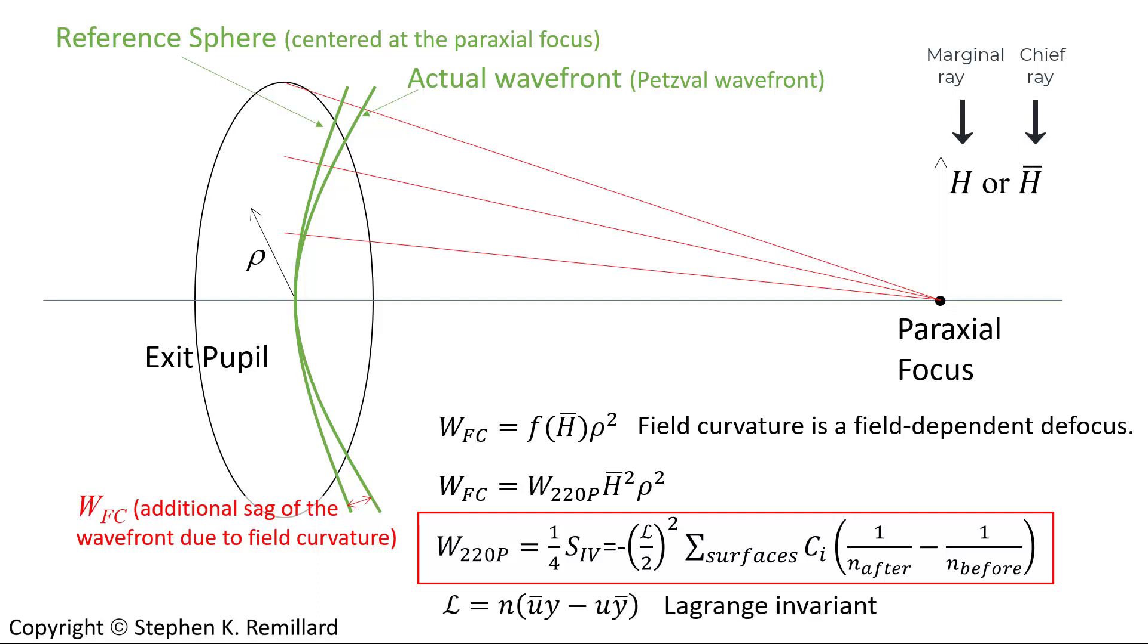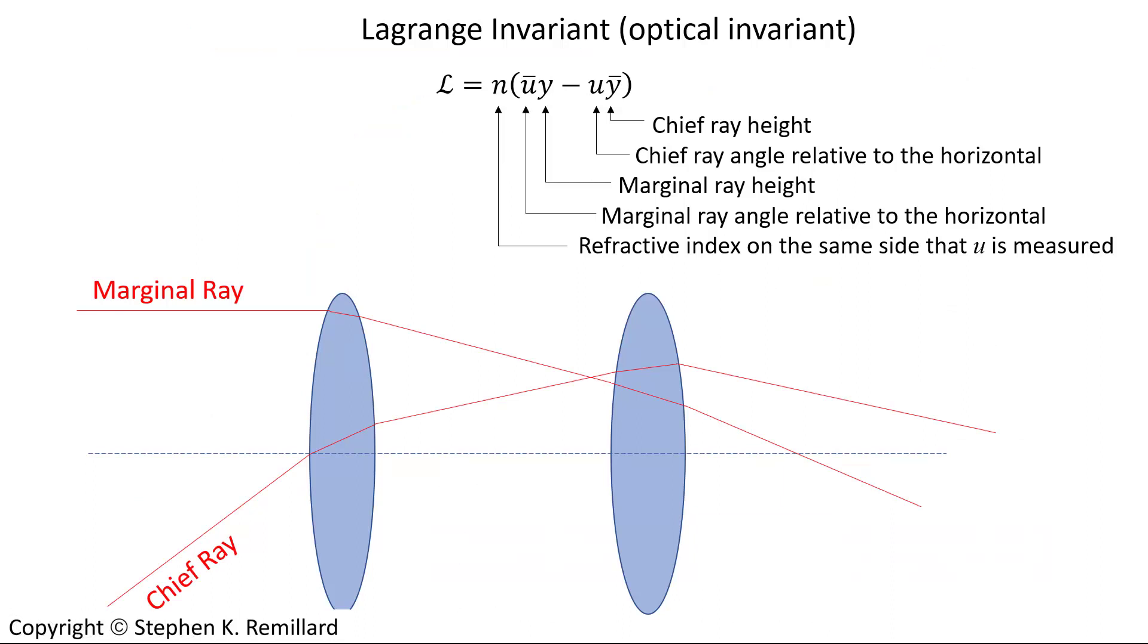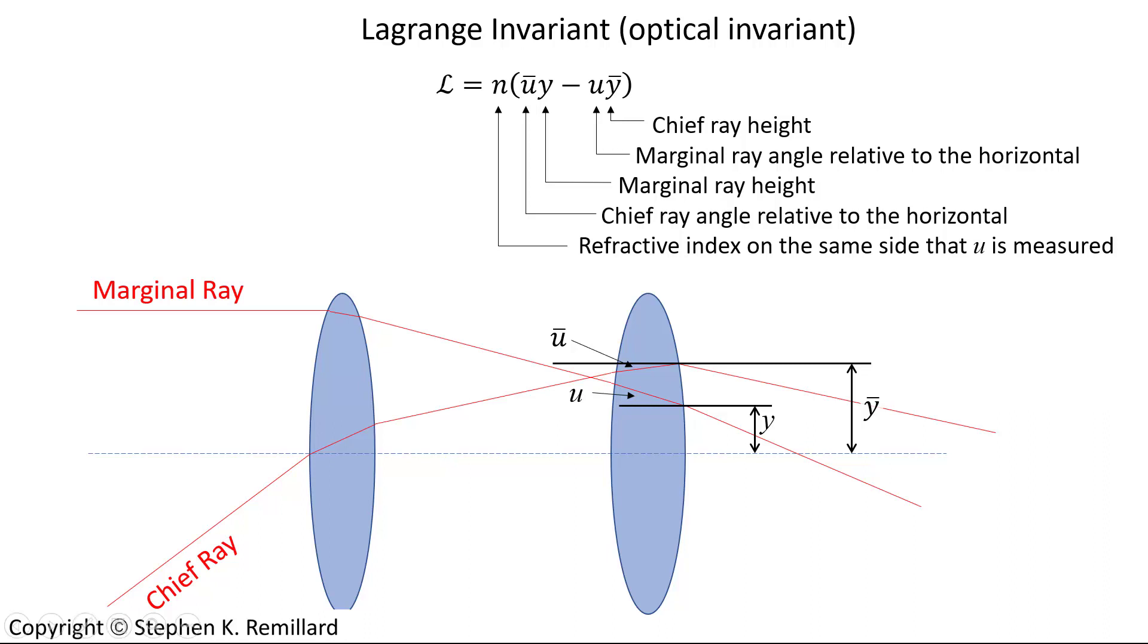Let us begin with L, the Lagrangian invariant, usually given by the Cyrillic character J, which I do not have in my equation editor, although I could probably find it. But I would use this funny L instead. Oftentimes an H is used, I imagine, because it is like J without the line down the middle. The Lagrangian invariant, or the optical invariant, has the same value throughout a system. It is given by the product of angle and ray height. Where Y bar is the chief ray height, and U is the marginal ray angle relative to the horizontal. Y then is the marginal ray height, and U bar is the chief ray angle relative to the horizontal. And that will have a value throughout a system. It is calculated only at the surfaces.